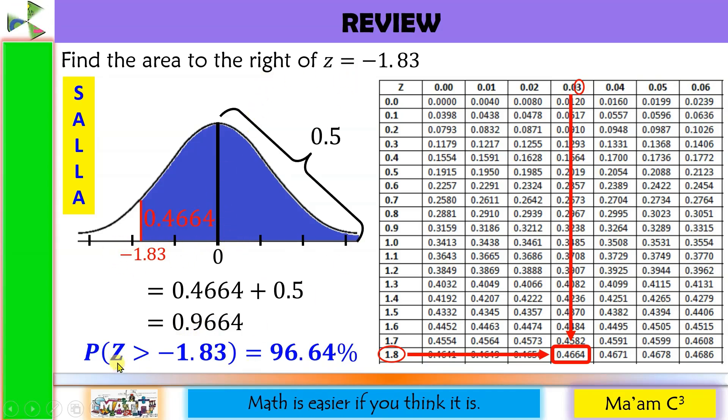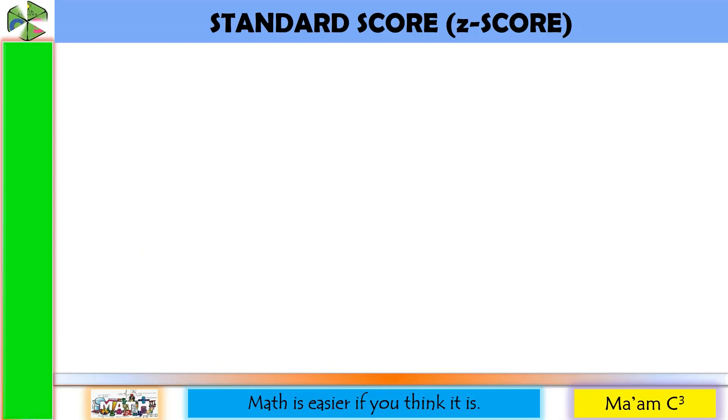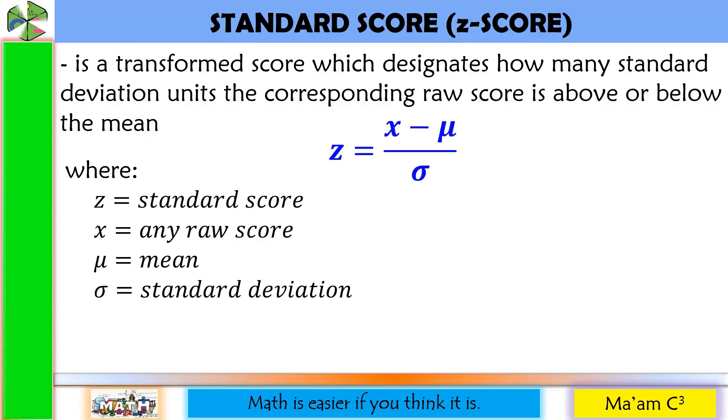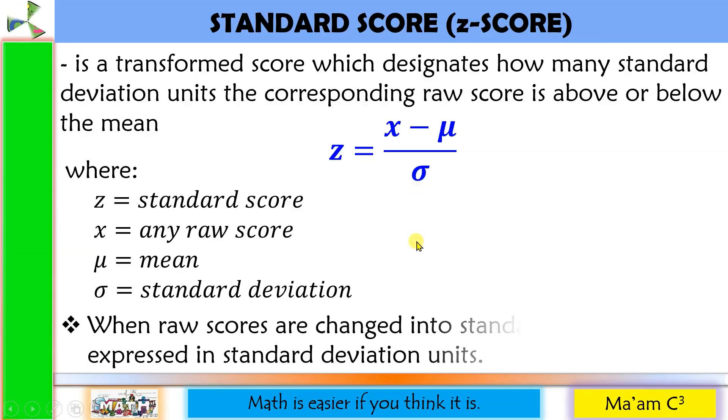Let us define standard score or Z-score. It is a transformed score which designates how many standard deviation units the corresponding raw score is above or below the mean. So we have a formula for this where Z is the standard score, X is any raw score, mu is the mean, and sigma is the standard deviation. When raw scores are changed into standard scores, they are expressed in standard deviation units. But you may want to ask me, ma'am, why do we have to convert raw score into standard score?